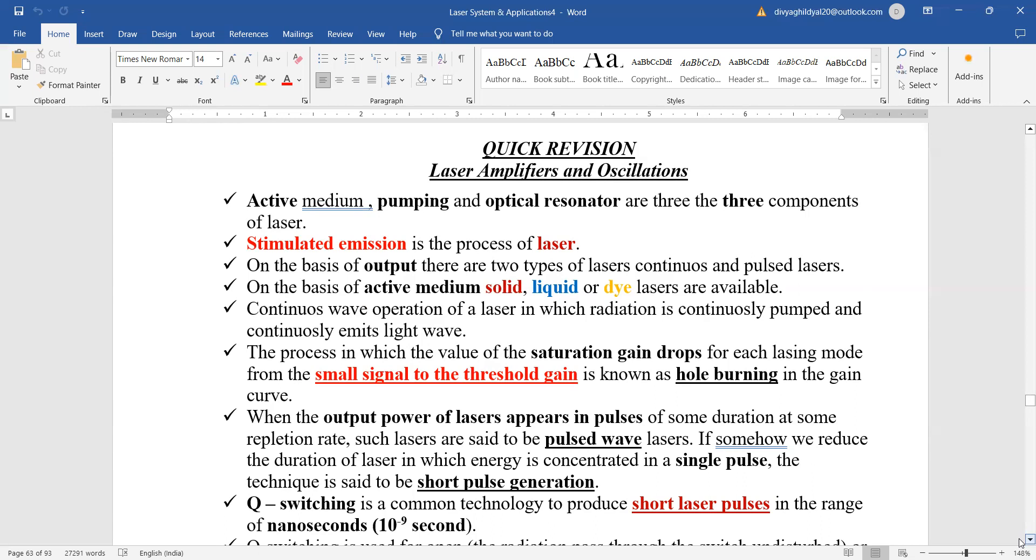On the basis of output we have two types: continuous wave and pulsed ones. Active mediums are of three types: solid, liquid or dye, and gas.